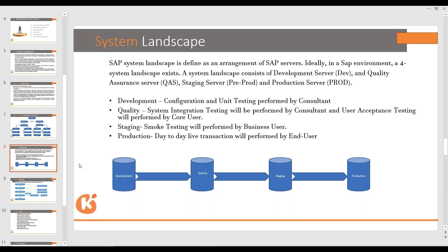As a functional consultant, you receive requirements from the business. You have to configure the system as per the requirement. If it is not related to configuration, you have to develop an enhancement — a Z development — with the help of a technical consultant. In the development server, you configure the system and do Z development as per the requirement. Once done, you perform unit testing in the development server to check if it works as per expected results.